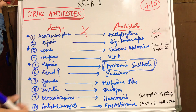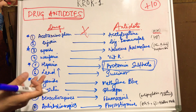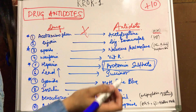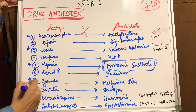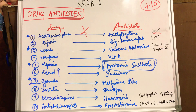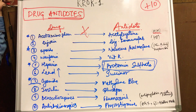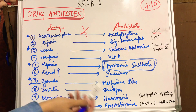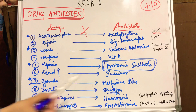The seventh one is cyanide — this is basically a poison. If you have a high amount of cyanide in the blood, you give methylene blue. This is also very important. The next one is insulin — the antidote for insulin is glucagon. This is very easy; you may have studied this in internal medicine.